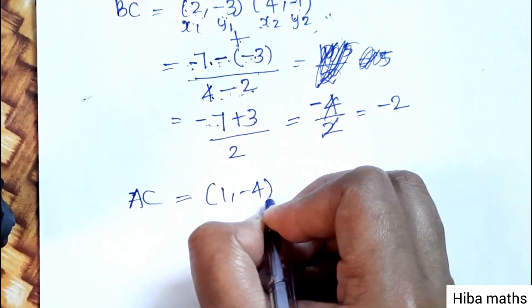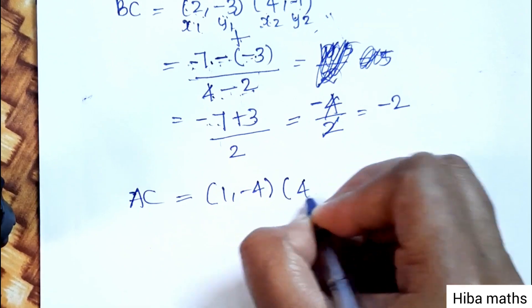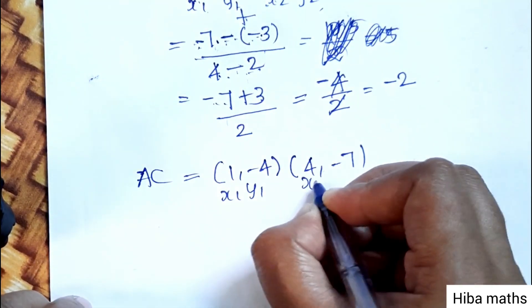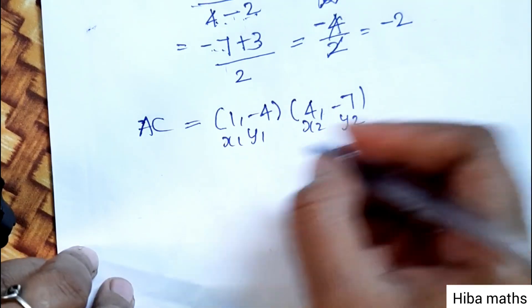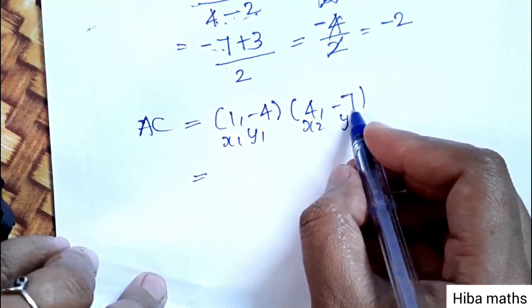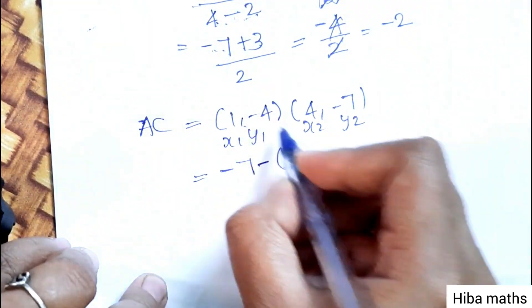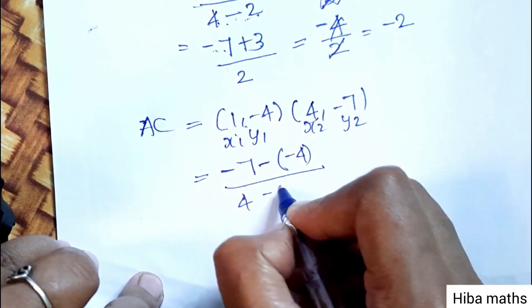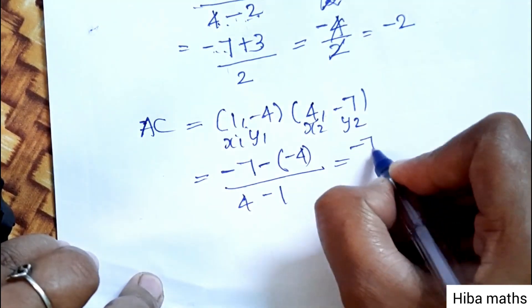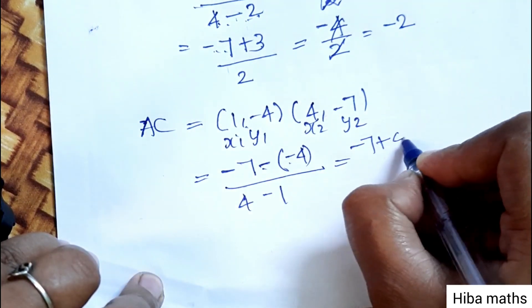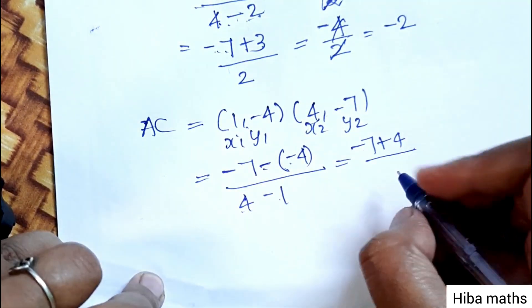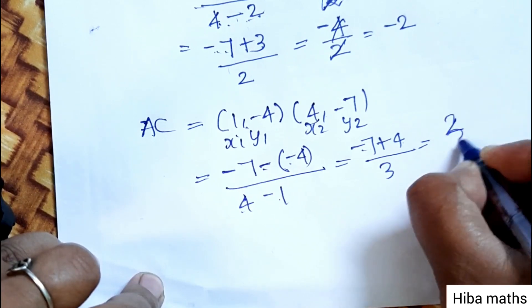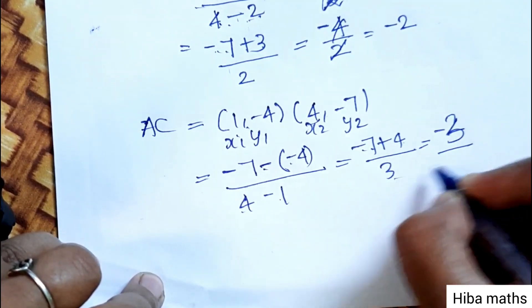For BC, B is (2,-3), C is (4,7). x1, y1, x2, y2. Per slope formula, y2 is 7 minus y1 which is minus 3, divided by x2 minus x1, which is 4 minus 2. That equals 7 plus 3 divided by 2, which is 10 divided by 2, equals 5. Wait, minus 3 divided by 3.